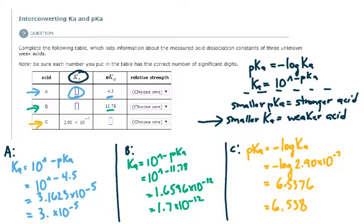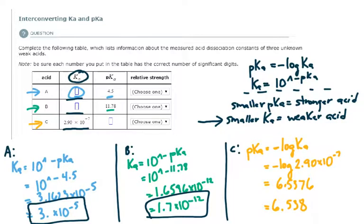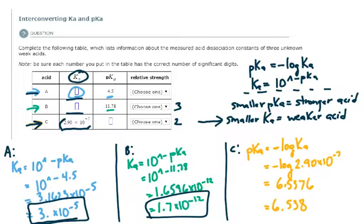Looking at acids A, B, and C: the Ka for C is 2.9 times 10 to the minus 7, the Ka for B is 1.7 times 10 to the minus 12, and the Ka for A is 3 times 10 to the minus 5. B has the smallest Ka value, so B is the weakest acid. C has the next smallest Ka value, making it the second weakest. And acid A has the largest Ka value, so of the three, it is the strongest.